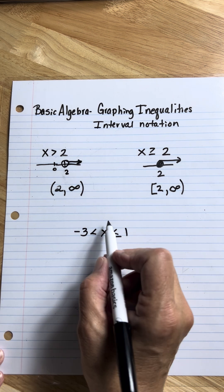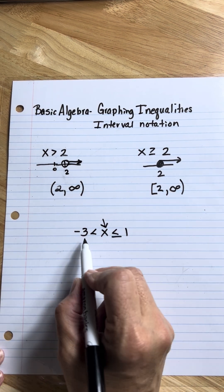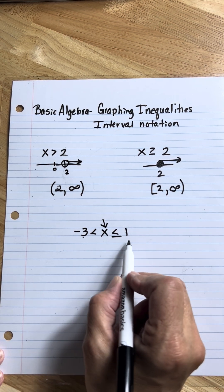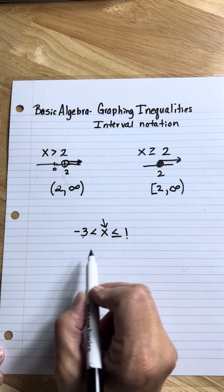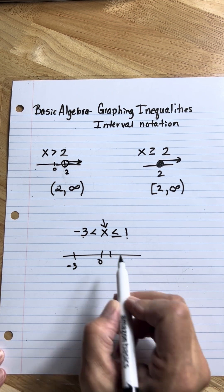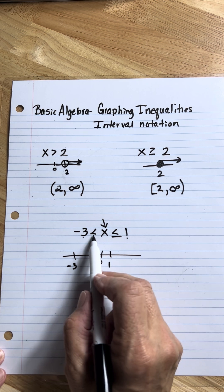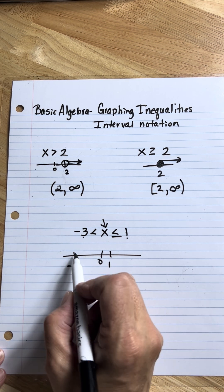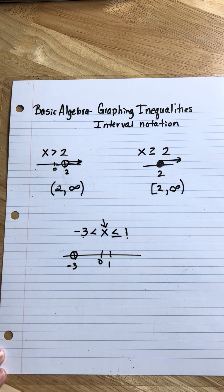Okay, this one down here, the value of x is in between negative three and one. So let me draw a number line here. If this is negative three, and this is one. All right, right here, I have just the less than sign, so that's going to be an open dot.